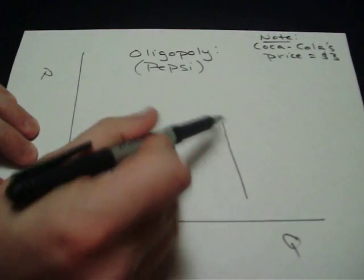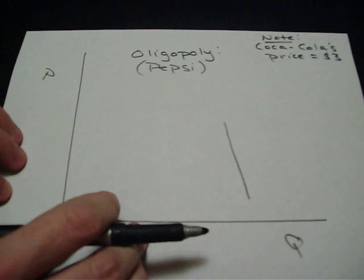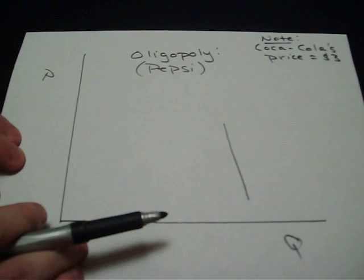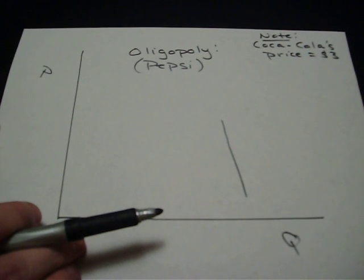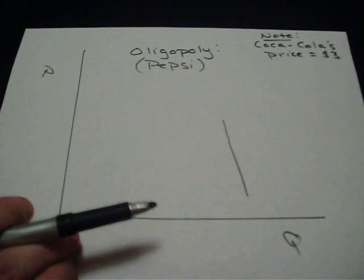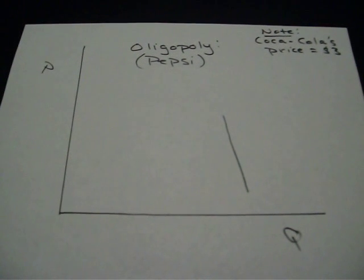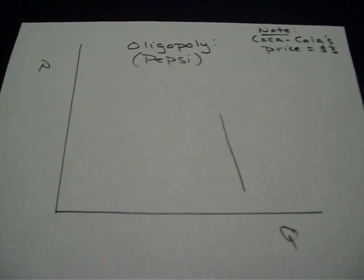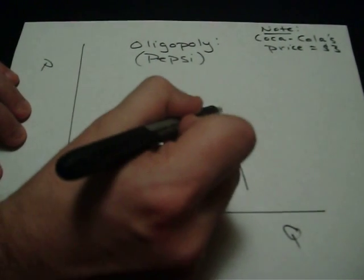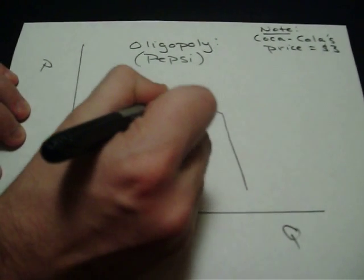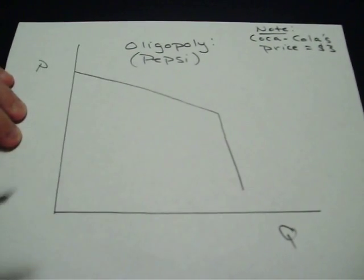That is, price goes up and up, and people are still buying the same quantity as long as we're below Coke's $3 price. Once we go over Coke's price, if we start to charge $3.01, $3.02, $3.03, then people are going to stop buying our product. There will be a drastic decrease in the quantity that people are buying. So demand above Coke's $3 price is going to be more elastic like this.